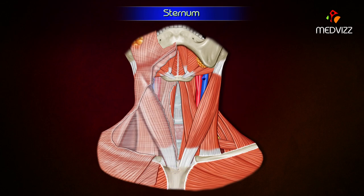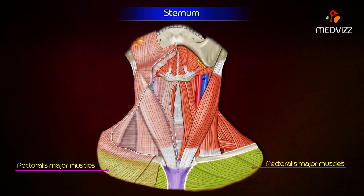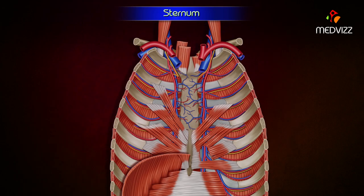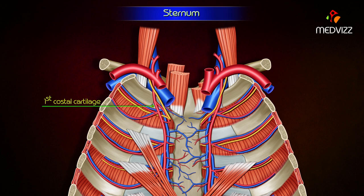The anterior surface on each side provides attachment to the sternal head of the sternocleidomastoid and pectoralis major muscles. The posterior surface is smooth and forms the anterior boundary of the superior mediastinum. On each side, it provides attachment to two muscles: sternohyoid at the level of the clavicular notch, and sternothyroid at the level of the facet for the first costal cartilage.